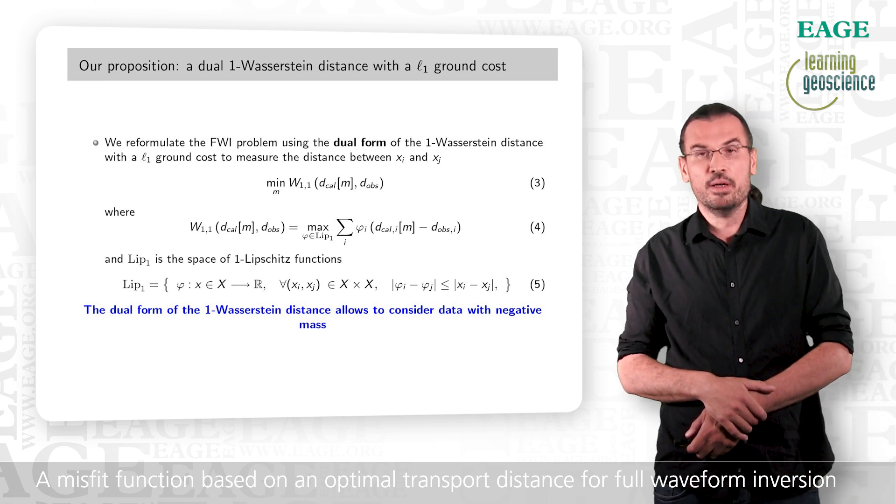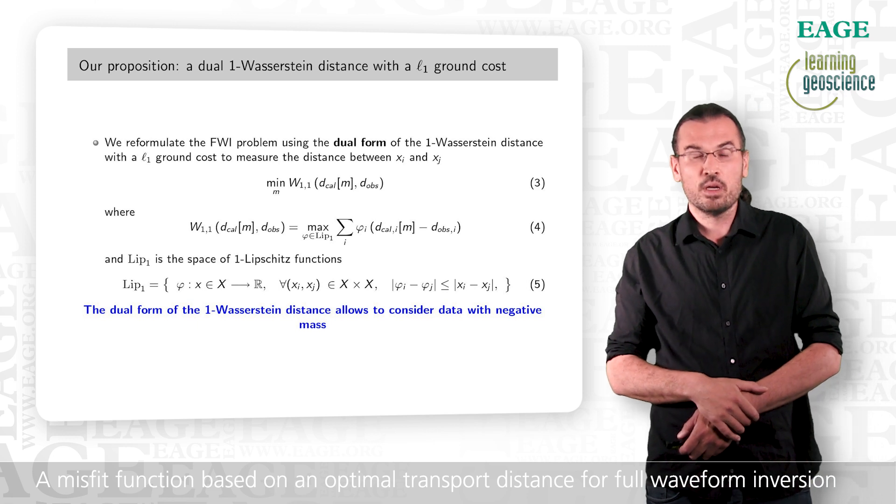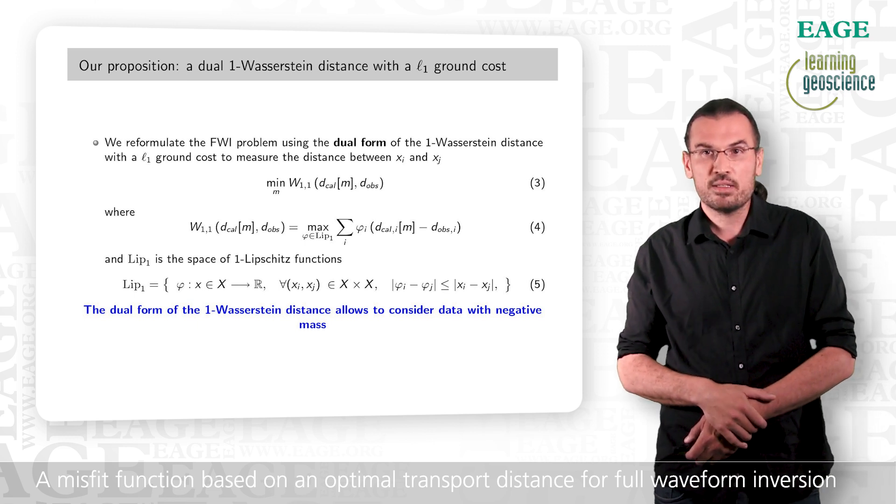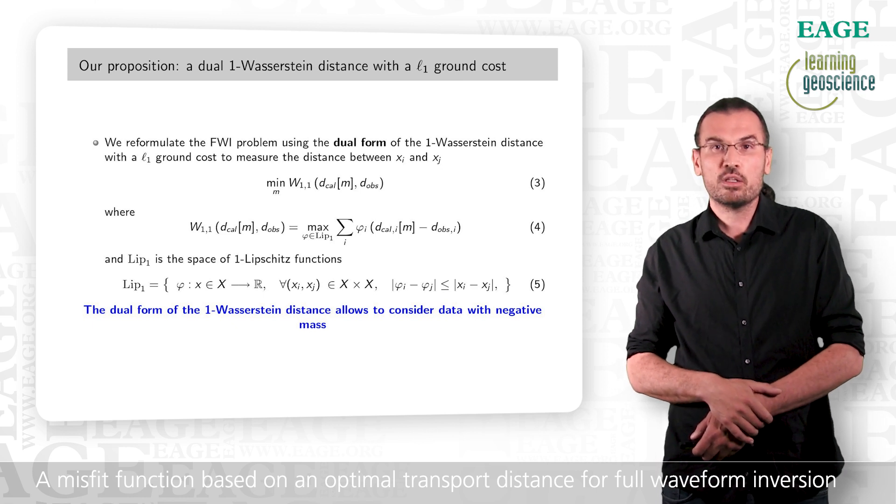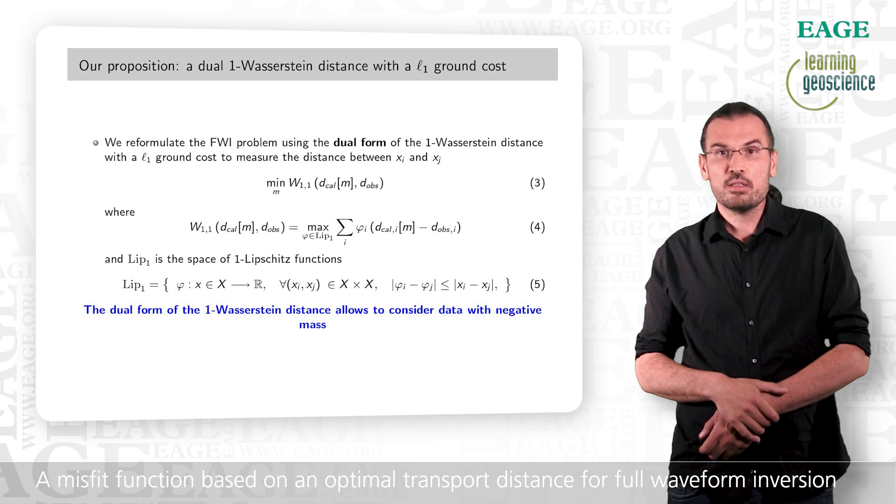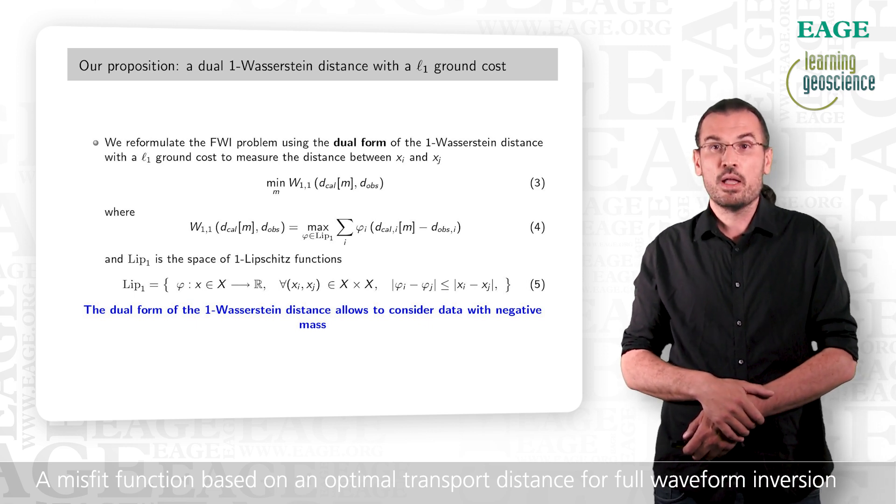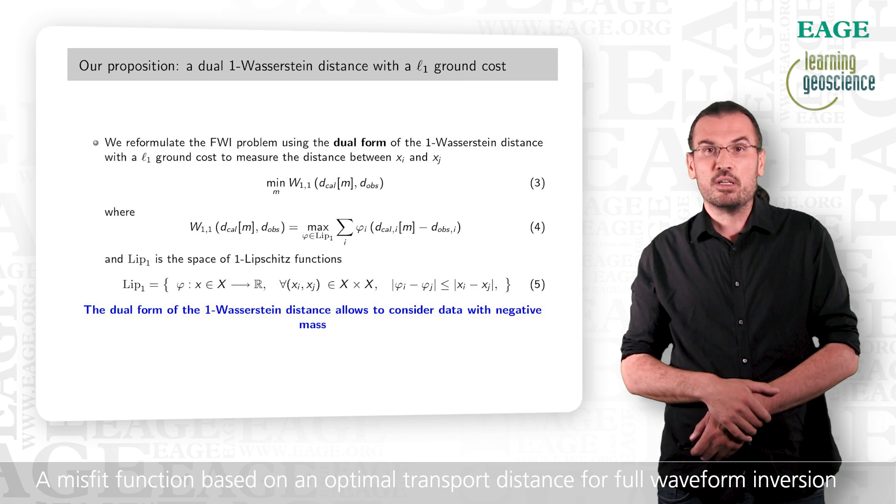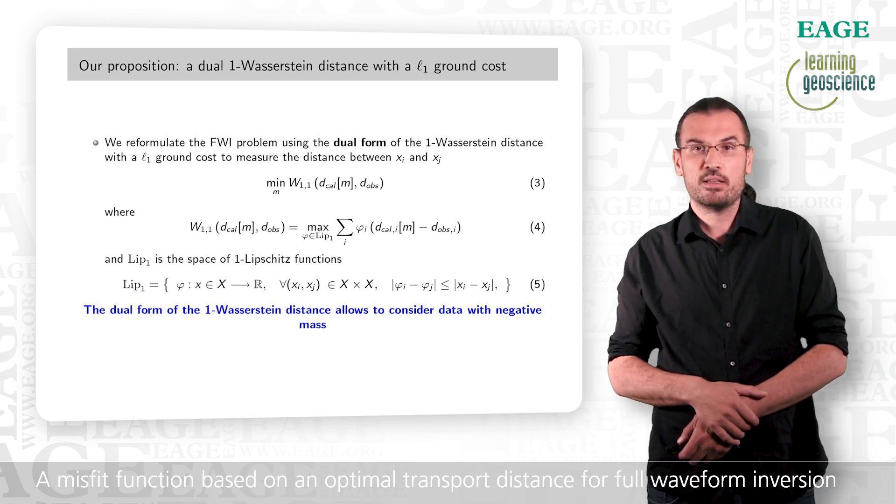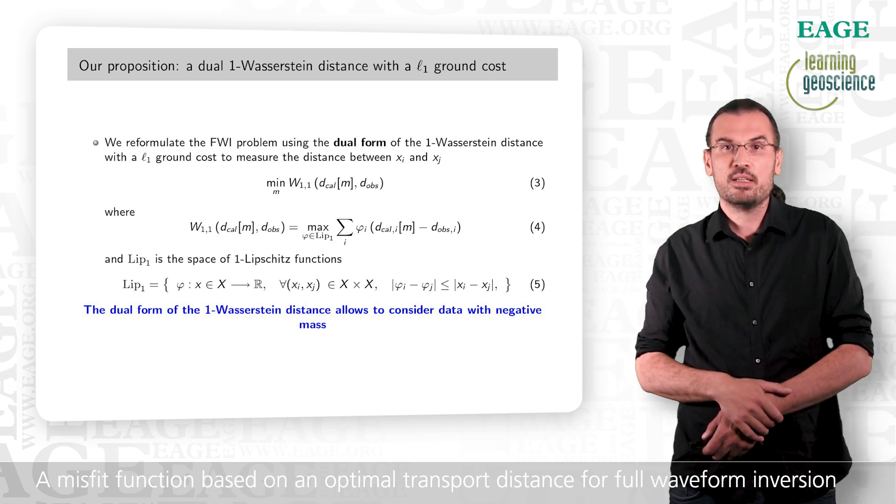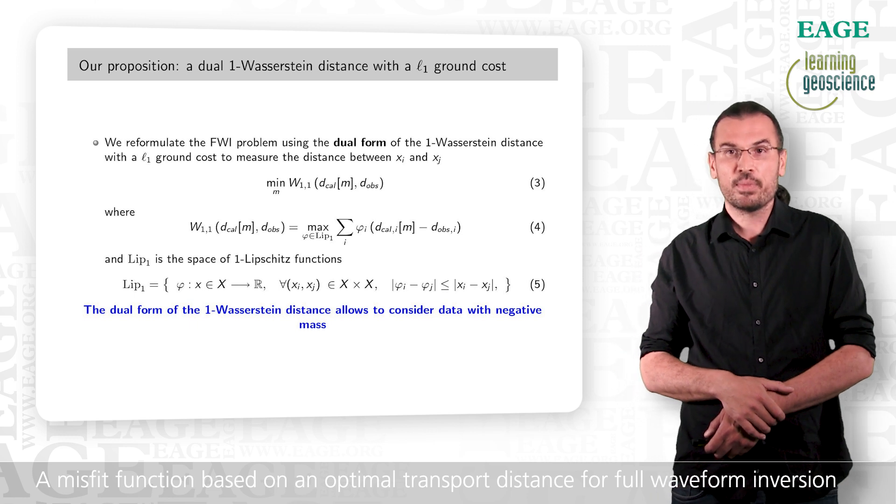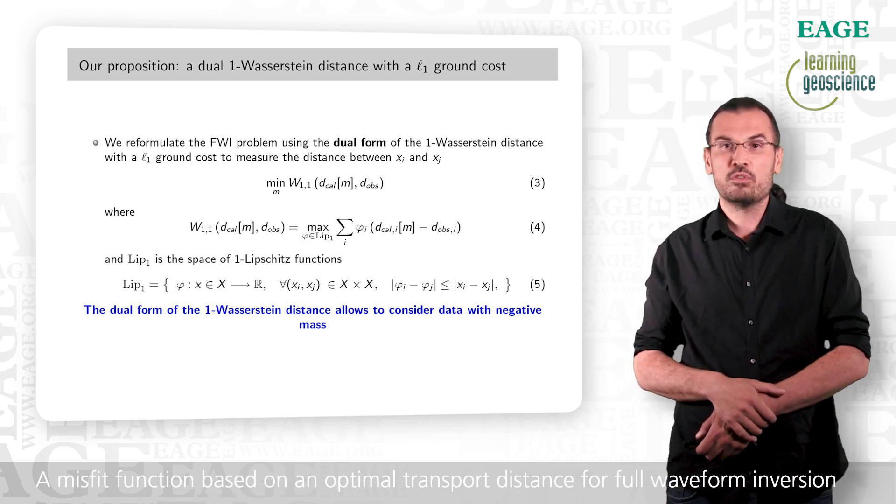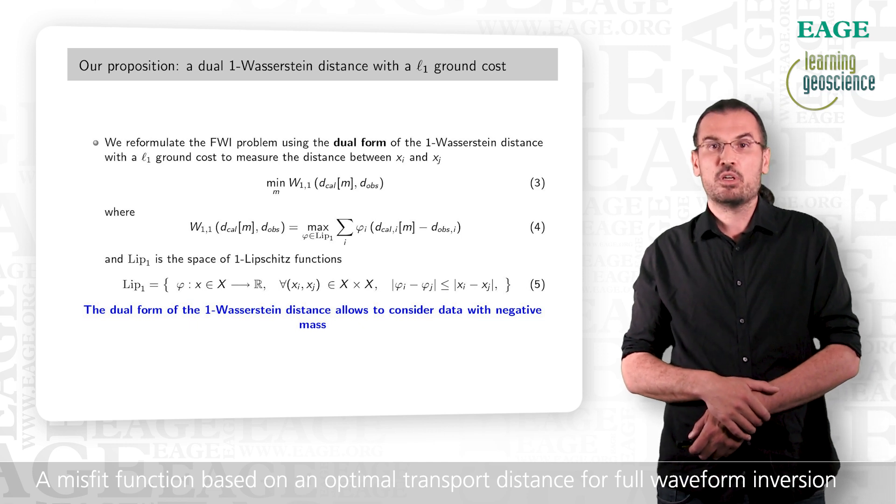Based on these two difficulties, we came up with the following strategy. We consider a particular instance of the optimal transport distance, named Wasserstein 1 distance, with a particular ground cost, which is the L1 ground cost. The choice of the Wasserstein 1 distance is made because its dual formulation has the good property to be able to deal with non-positive data. The choice of the L1 ground distance is made to reduce the computational cost, as I will explain in the next slide. The dual form of the Wasserstein 1 distance amounts to solve a maximization problem over a set of Lipschitz functions phi, where the criterion to maximize is the sum for each point of the data space of the value of this function phi, multiplied by the residuals at this point.